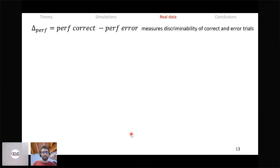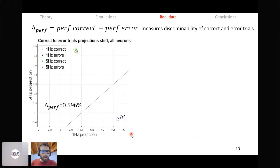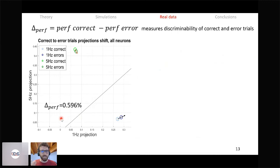Building the classifier separately on correct and error trials, the difference in performance between correct and error trials measures the discriminability between trials where the animal performed correctly versus failed. Taking all neurons together, there is a 0.6% increment in classifier performance moving from error to correct trials, meaning spike trains were on average more temporally precise on correct trials than on error trials — as expected if this is the neural code the animal uses. This value is significant under a permutation test.